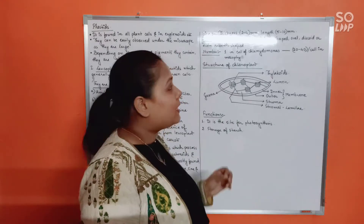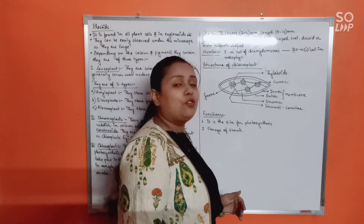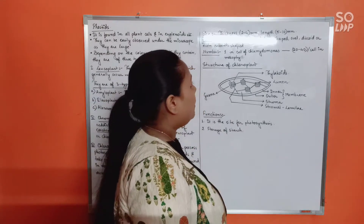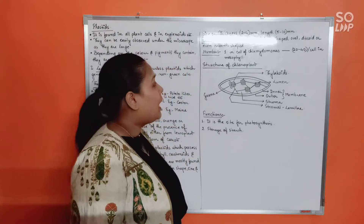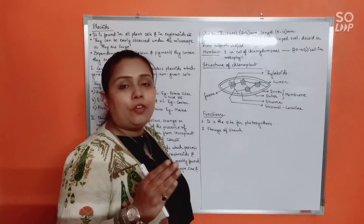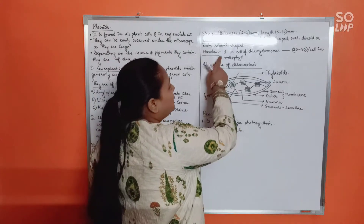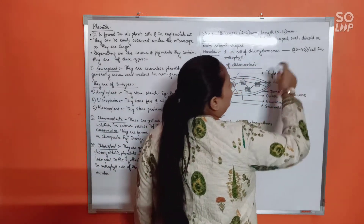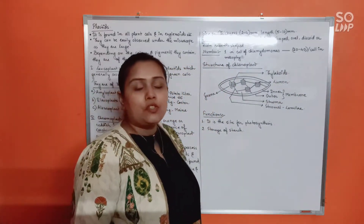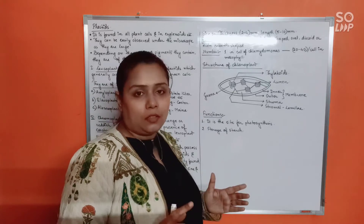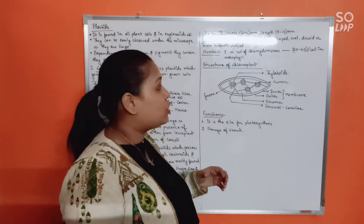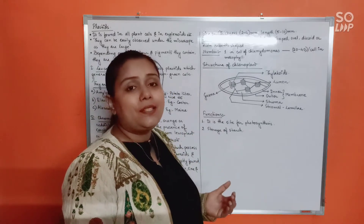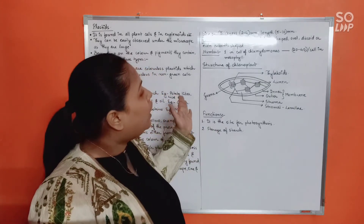The length of chloroplasts ranges from 5 to 10 micrometers. Their shape can be spherical, lens-shaped, oval, discoid, or even ribbon-shaped. The number of chloroplasts per cell can be as few as one in Chlamydomonas - a unicellular green alga - to 20 to 40 per cell in mesophyll cells.